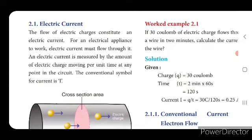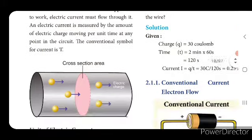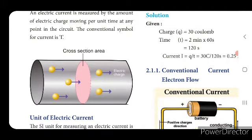For an electrical appliance to work, electric current must flow through it. Electric current is measured by the amount of electric charge moving per unit time — unit time means one second, one minute, one hour, and so on — at any point in the circuit.